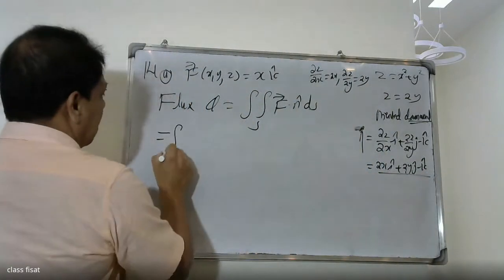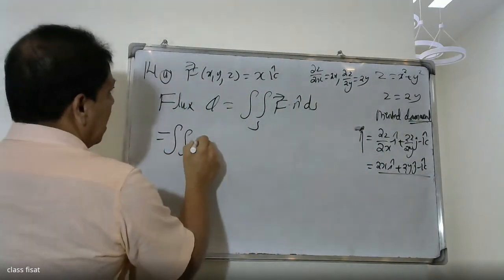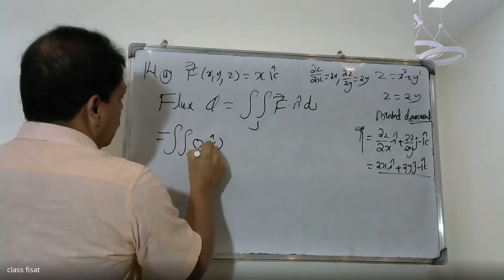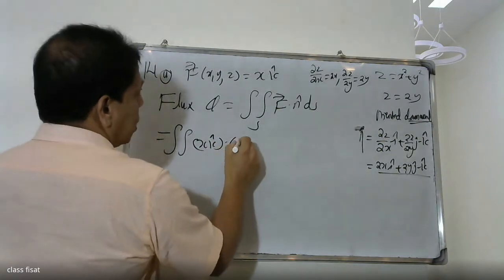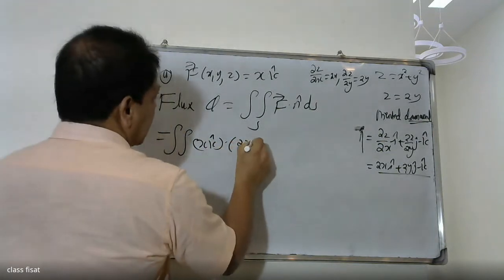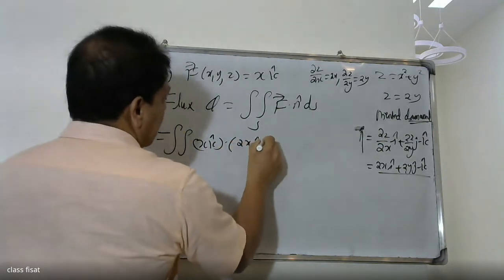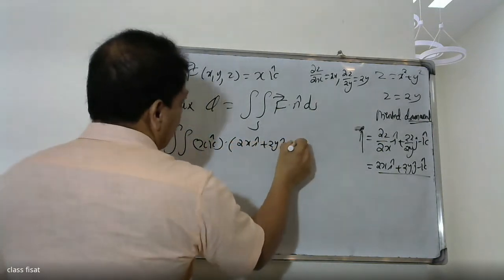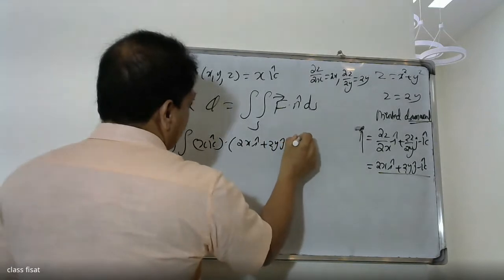We have 2x and 2y, so we substitute into the formula: the double integral over S of x·k dot (2x·i + 2y·j − k) dA.